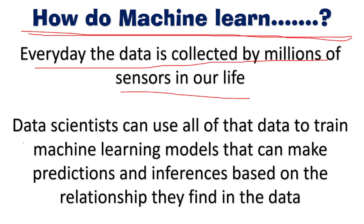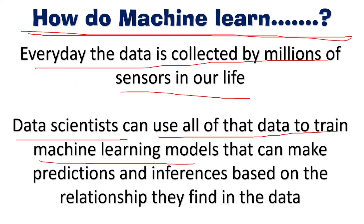Then data scientists — those who deal with this data — can use all of it to train machine learning models, so that the models can make predictions and inferences based on the relationships they find in the data. The data scientists use this data to train computer models so that, by looking at all this data, the computer model will make predictions, interpret results, and try to find relationships between the data.